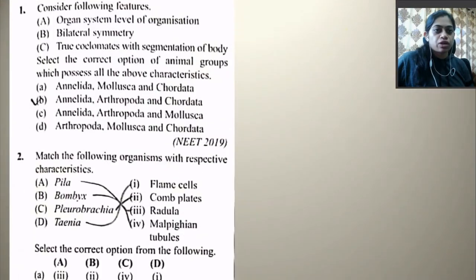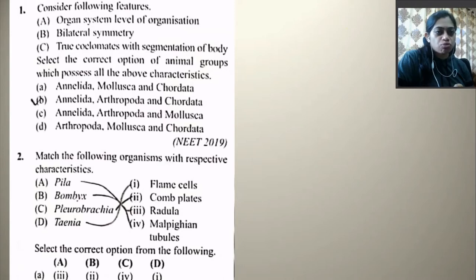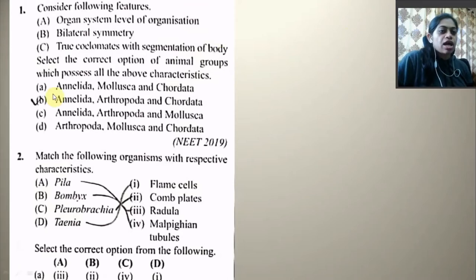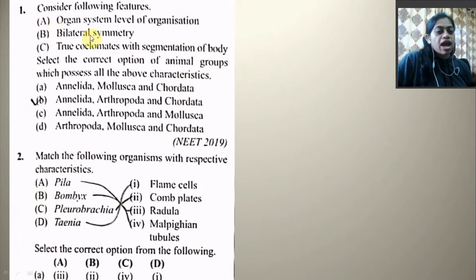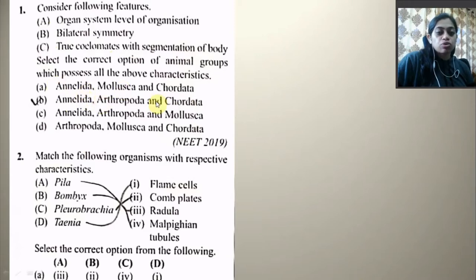First question: Consider the following features — organ system level of organization, bilateral symmetry, true coelomate with segmentation of body. Select the correct option of animal groups which possesses all the above characteristics. The options include annelids, mollusks, chordates, arthropods in various combinations. True segmentation of body is present in annelids, arthropods, and in some chordates, so the right answer is annelids, arthropods, and chordates.